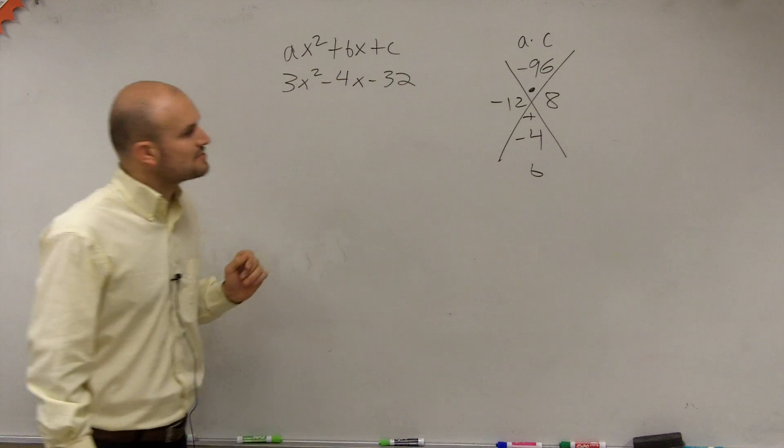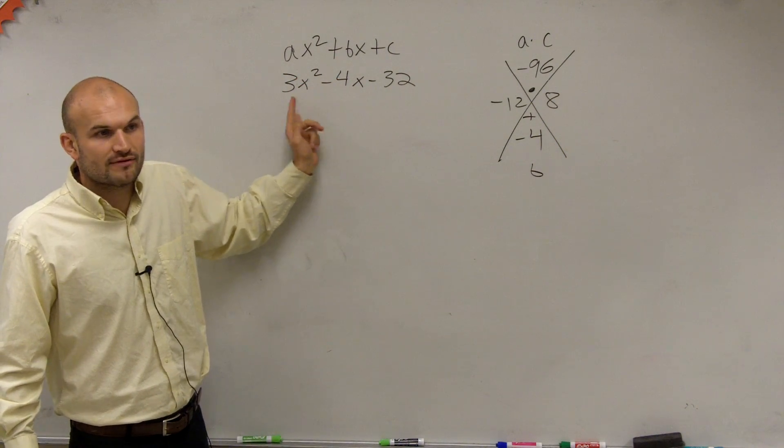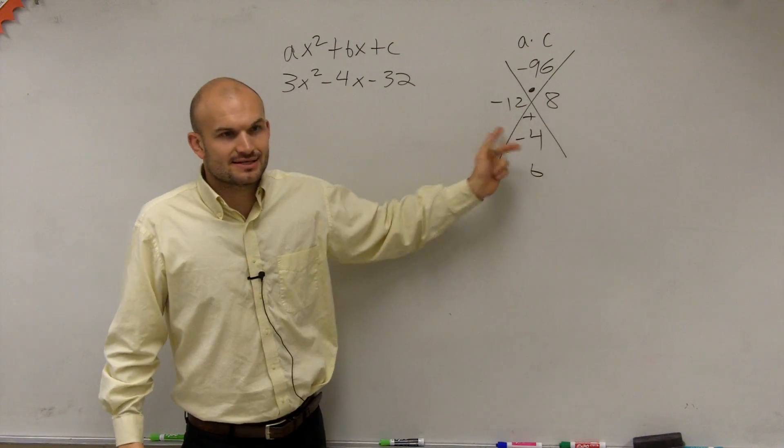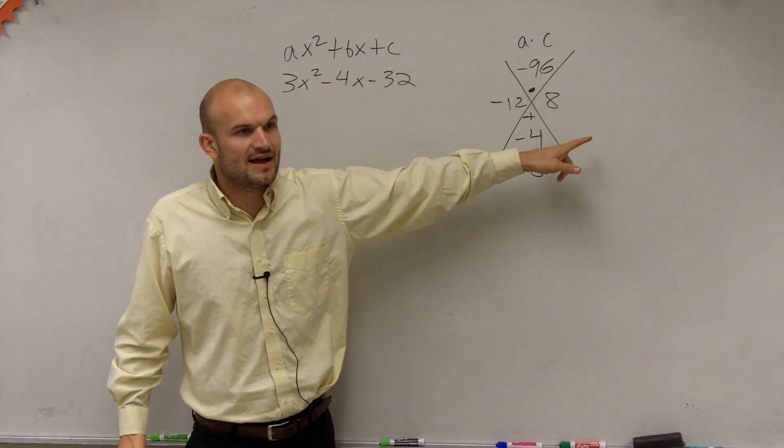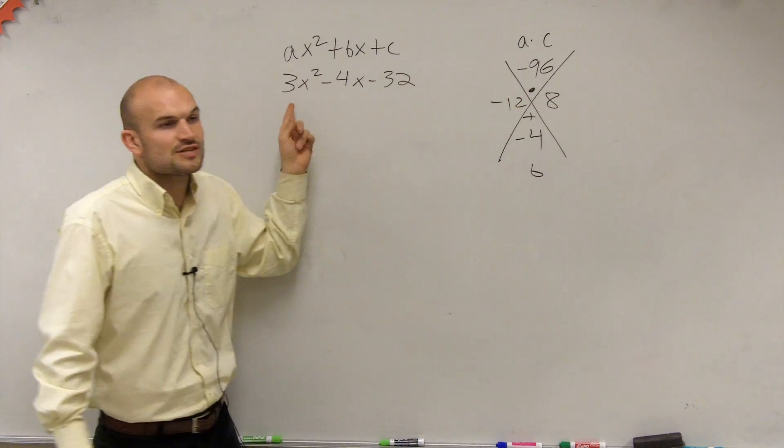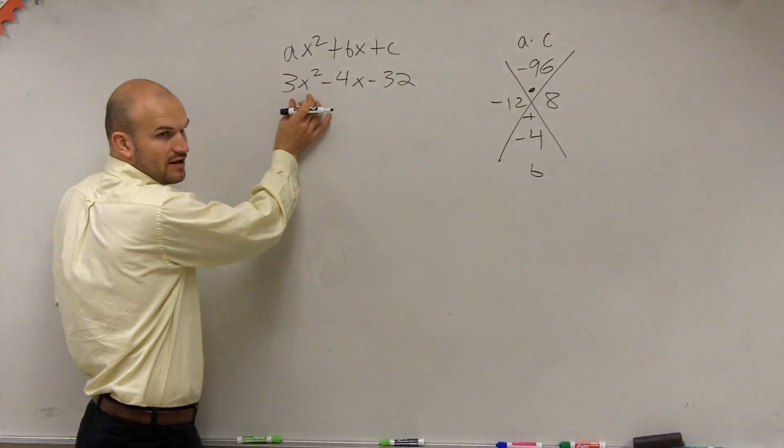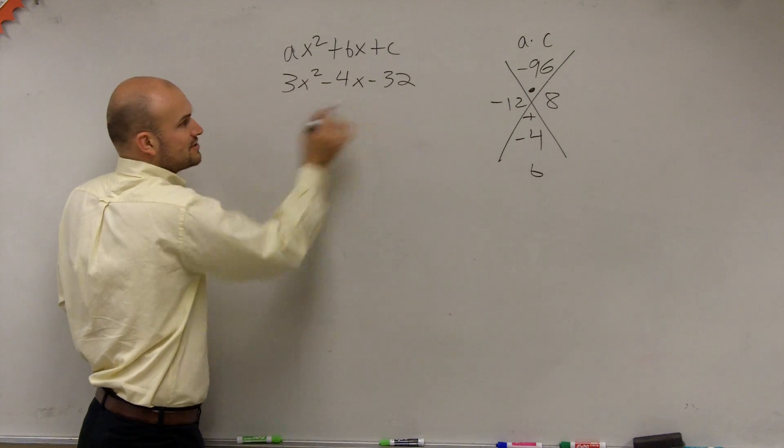So here's where a lot of times we get in trouble. When we had a 1 in front of our x squared, we could write these as part of our factors. We would just write x minus 12, x plus 8, right? That's what we would do when a was equal to 1. But since we have a 3 in front of there, these are not going to be your factors.